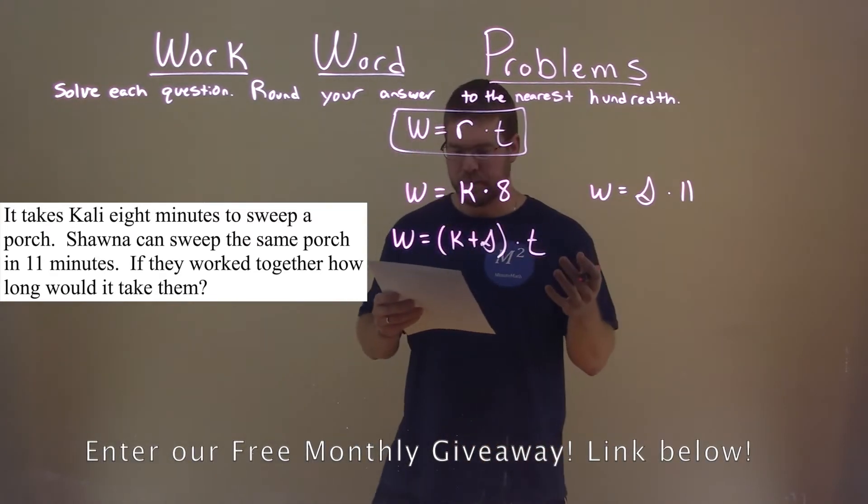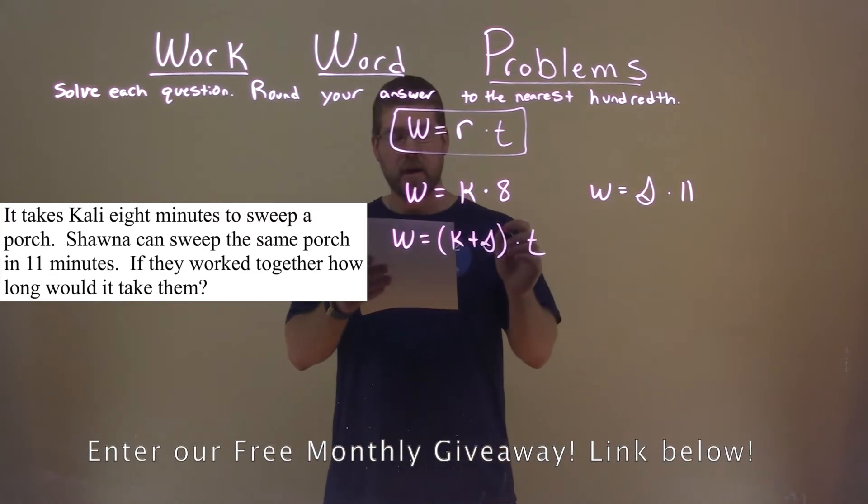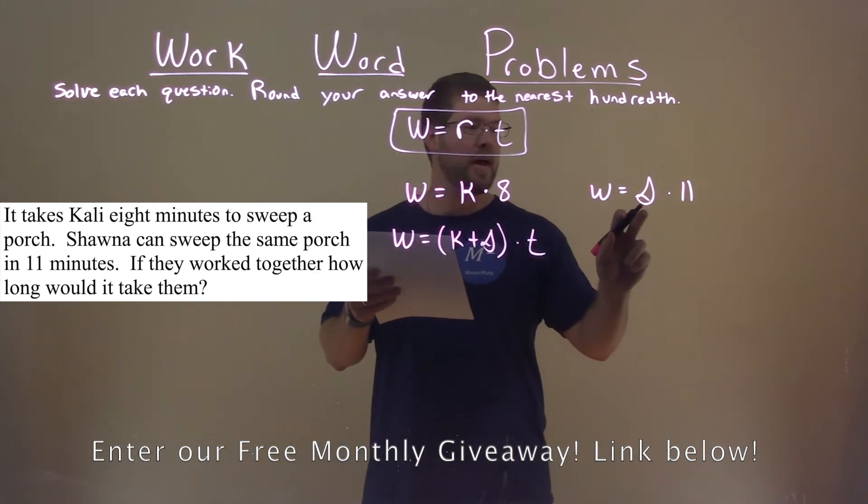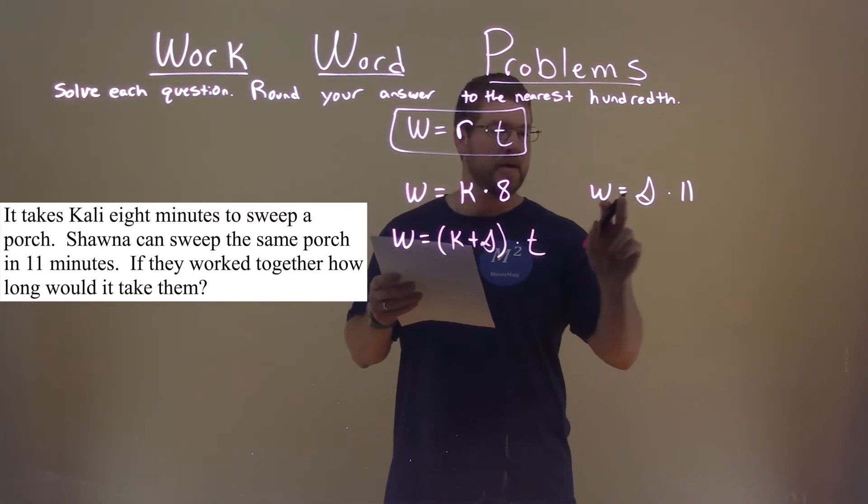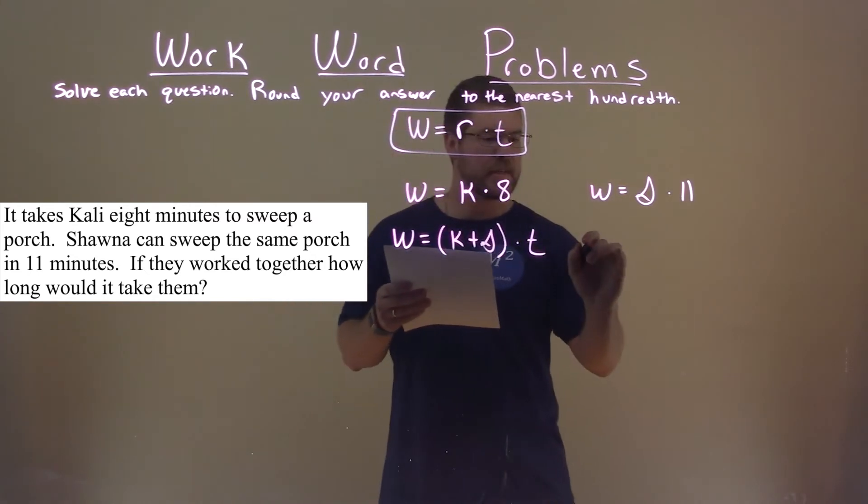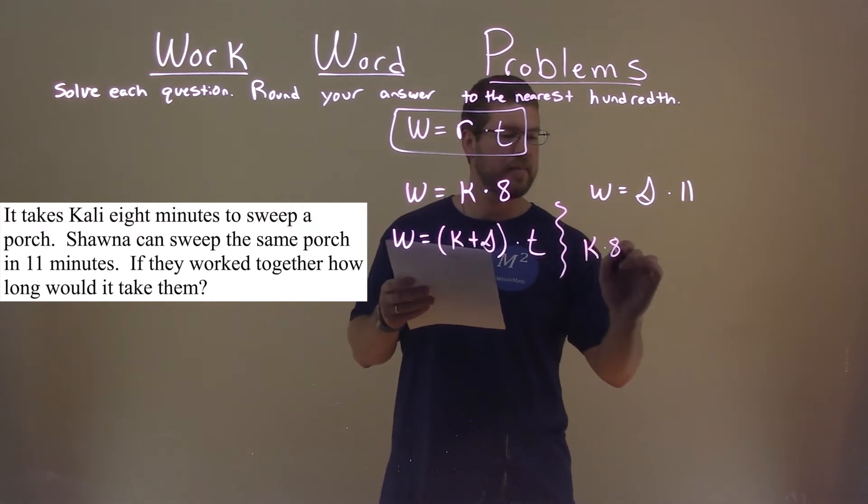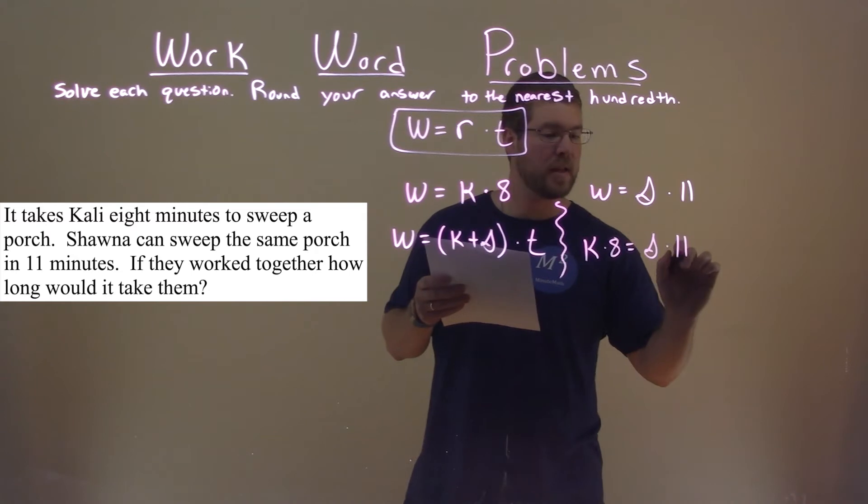So what do we need to adapt here? Well, the first thing I'm going to do is, we can see K times 8 and S times 11 both equal our work W. So if we set them equal to each other, K times 8 is equal to S times 11.